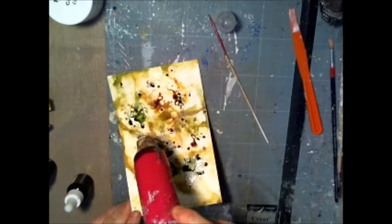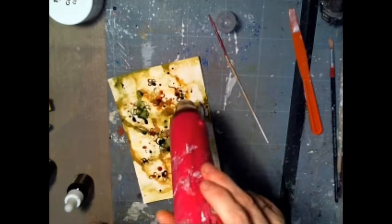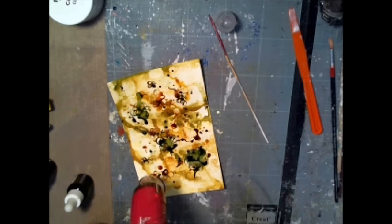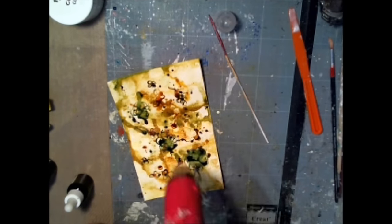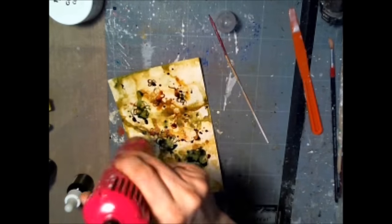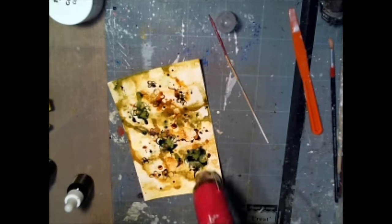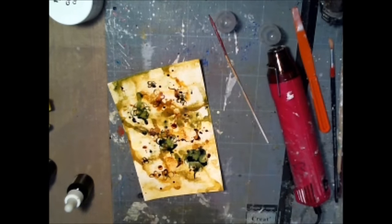So just use your heat gun again. Make it dry. Leave it maybe for half an hour or so to dry so we can add another layer of more mediums and some embellishments.